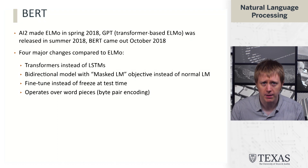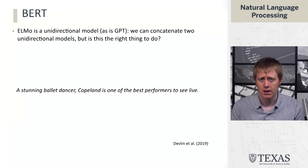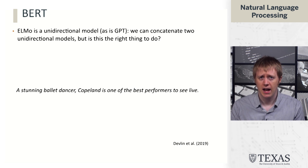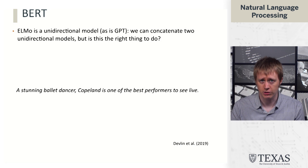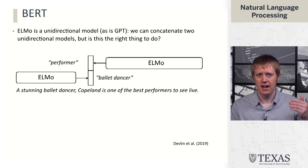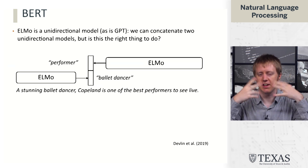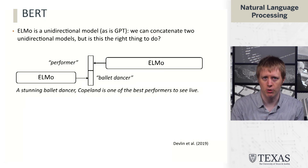We'll talk about some of these other differences later, but for now let's talk about this idea of masked language modeling and see why we might want to do it. In ELMo and also GPT we have a unidirectional model. If we think about encoding a sentence and trying to get good contextualized vector representations of the words in it, the way that we would understand the word 'Copeland' is by having ELMo run in each direction and taking the representations from those LSTMs at the time step corresponding to Copeland.